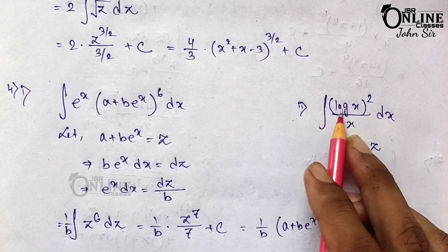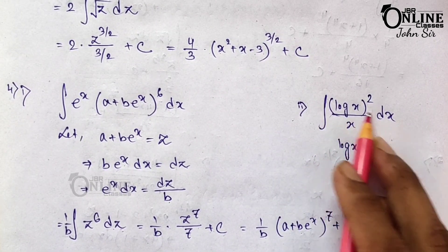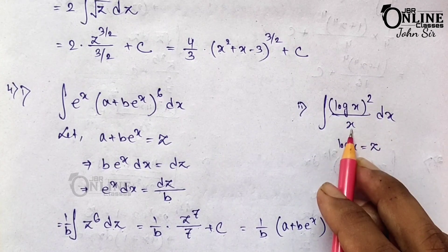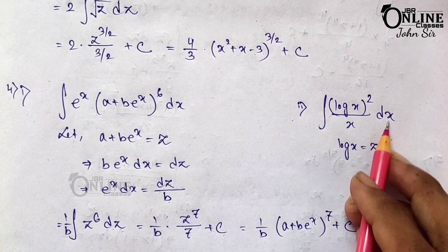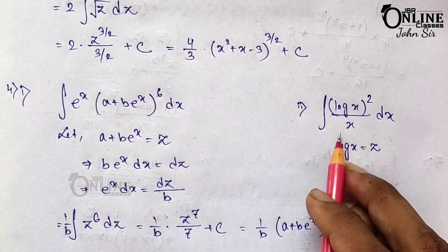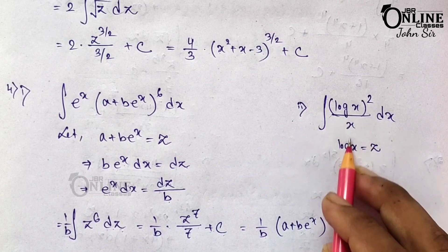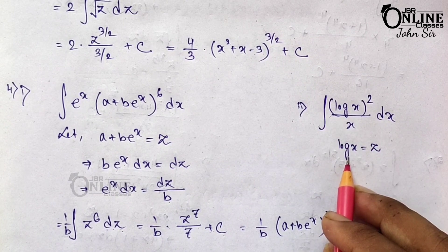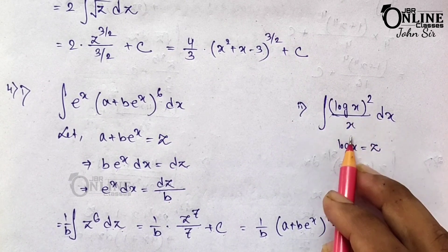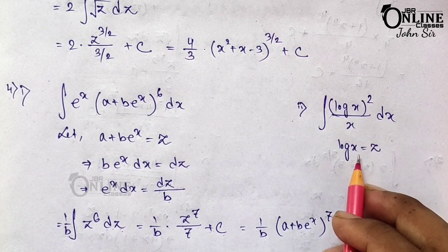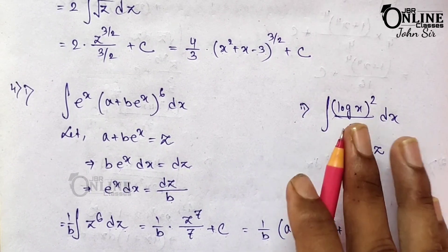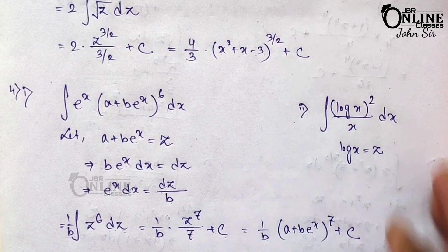Problem 4.2: ∫(log x)²/x dx. This is a very easy problem. Let log x = z, so the derivative gives (1/x)dx = dz. I hope you can solve it from here.